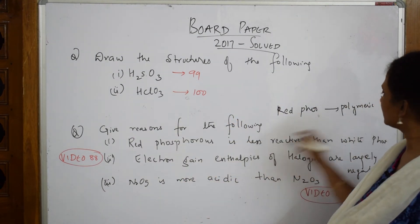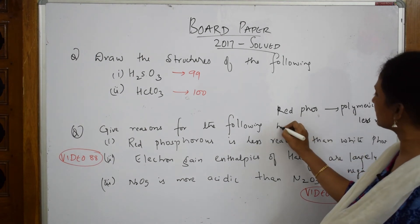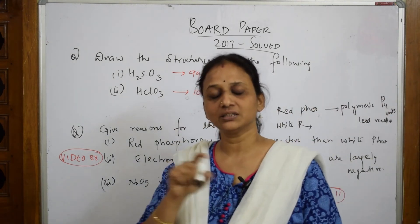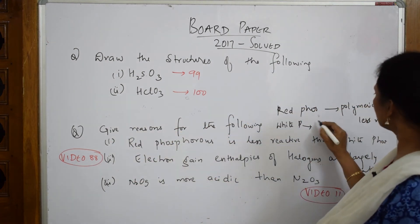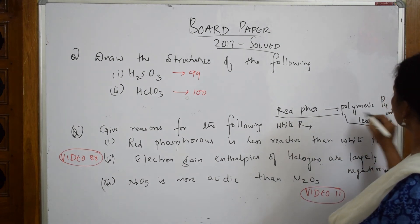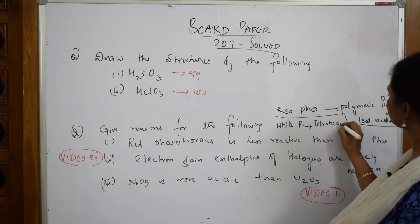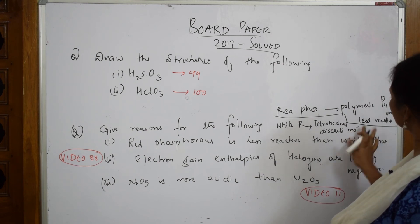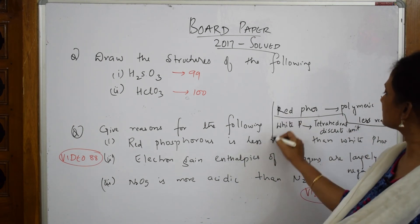White phosphorus, on the other hand, is more reactive because it has only one discrete tetrahedral P₄ unit — it is not linked to other units. Red phosphorus has many P₄ units linked together in a polymeric chain, whereas white phosphorus has a discrete tetrahedral structure. Because of this structural difference, red phosphorus is less reactive than white phosphorus.